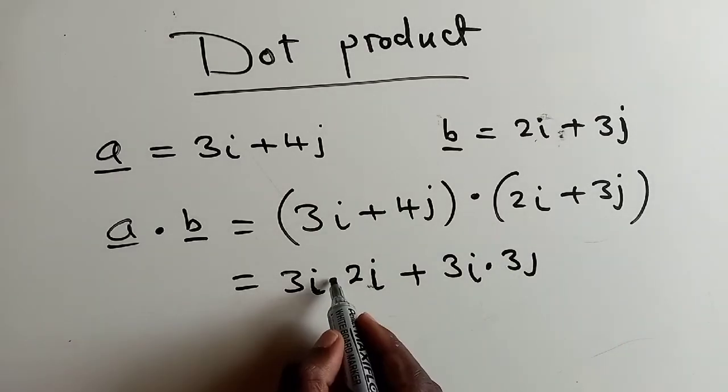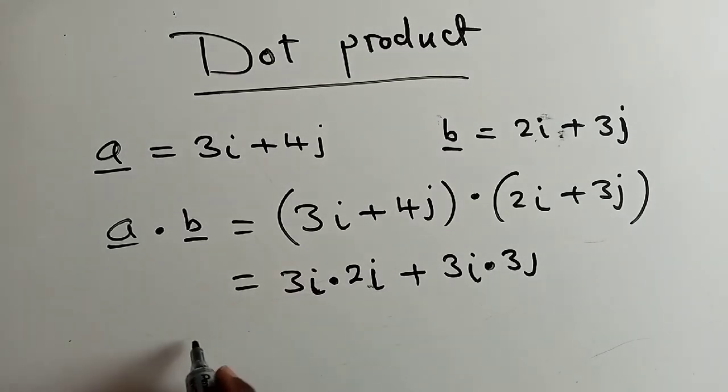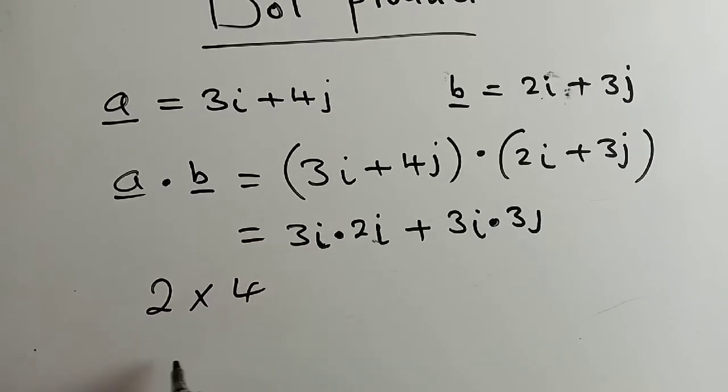By the way, you need to know that a dot in mathematics means multiplication. If you don't want to write 2 times 4, you can write it like this, 2 dot 4. These are just the same.